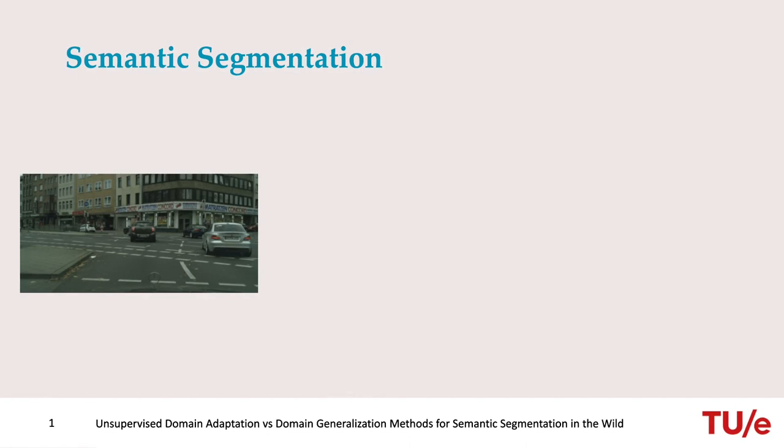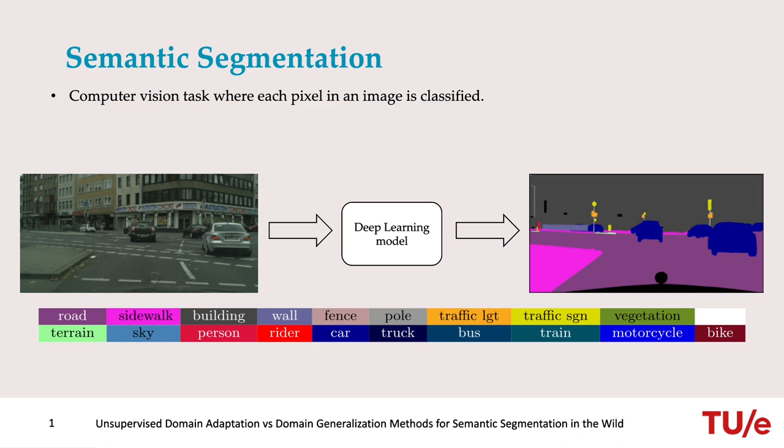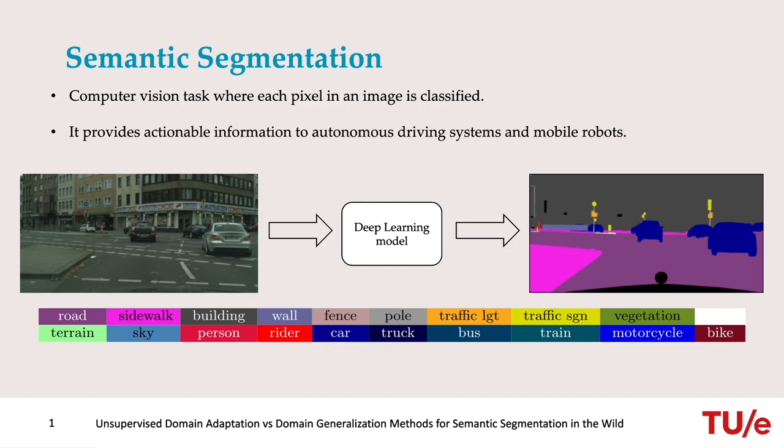Semantic segmentation is a computer vision task where each pixel in an image needs to be classified. Nowadays, this task is performed by training a deep learning model on abundant labeled data, and can provide actionable information to autonomous driving systems and mobile robots.